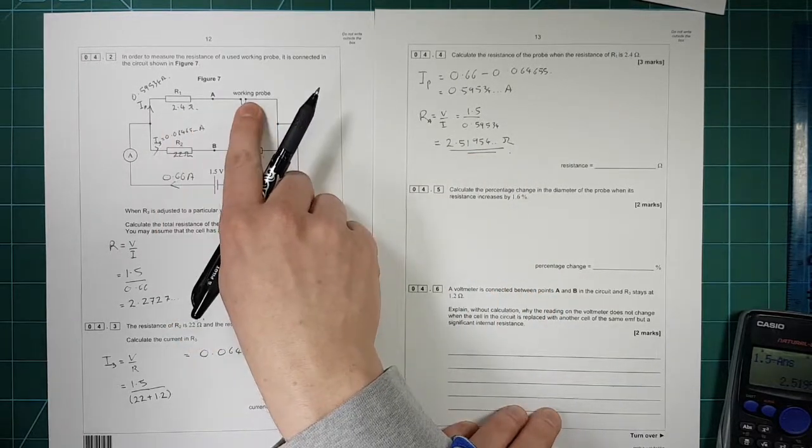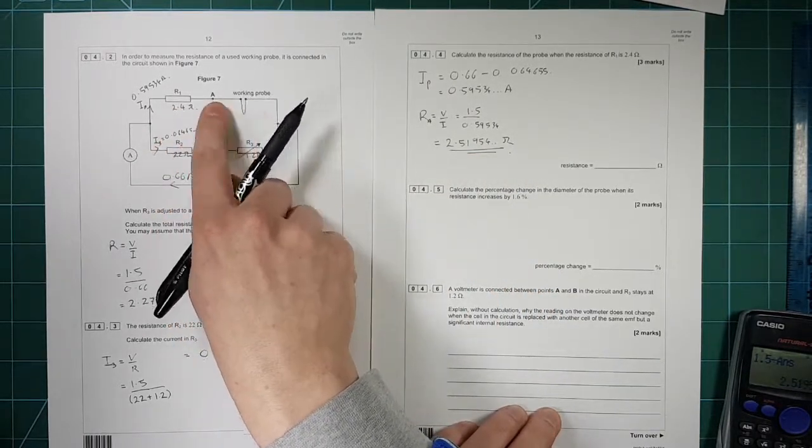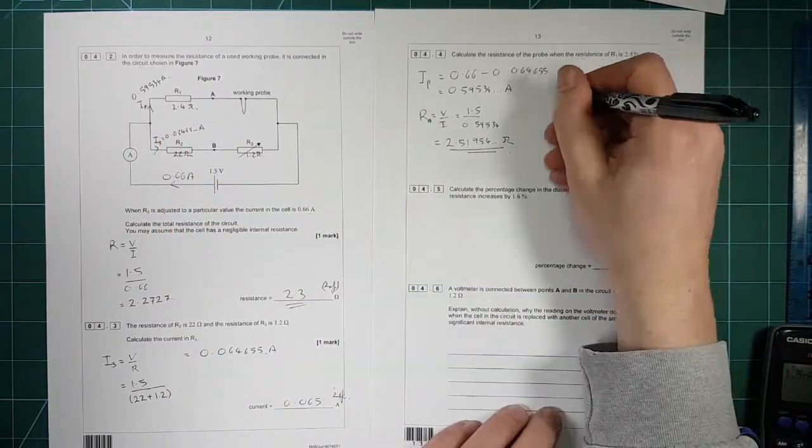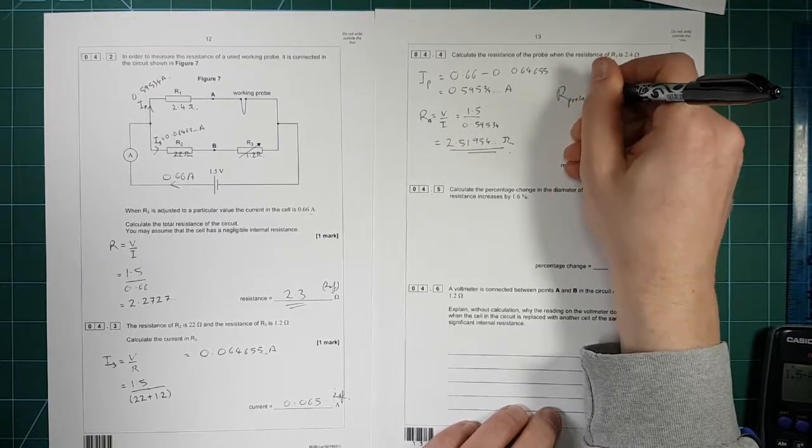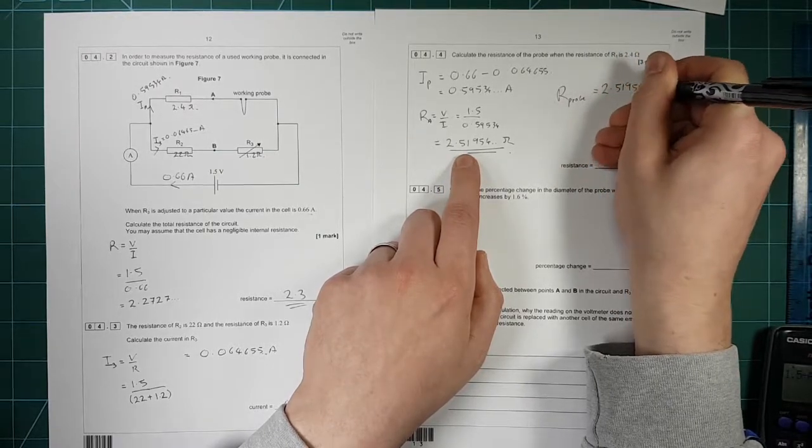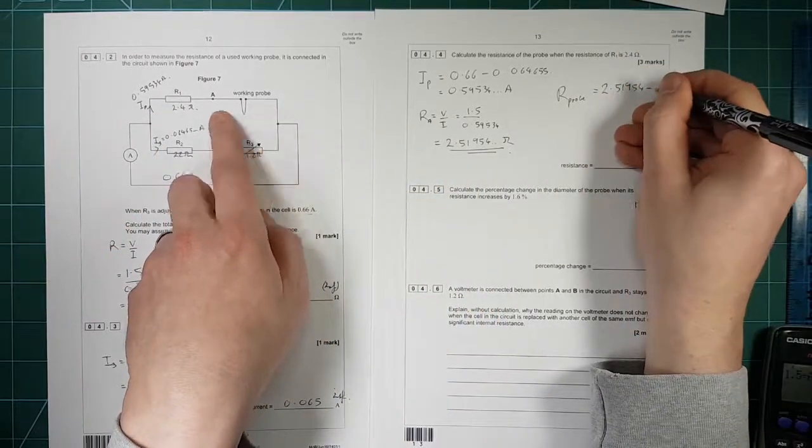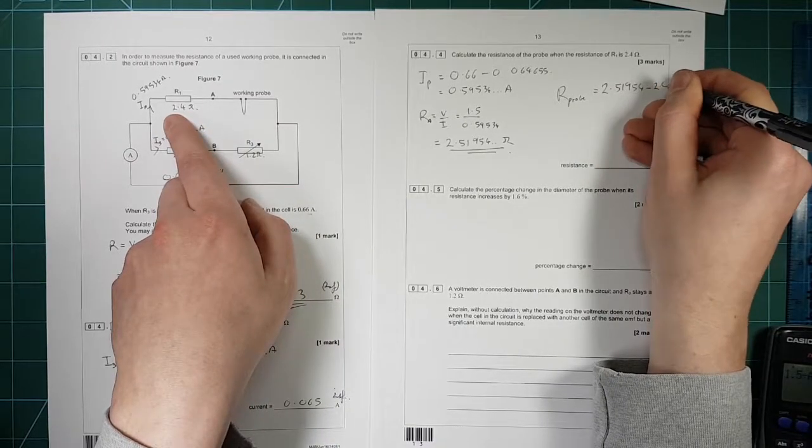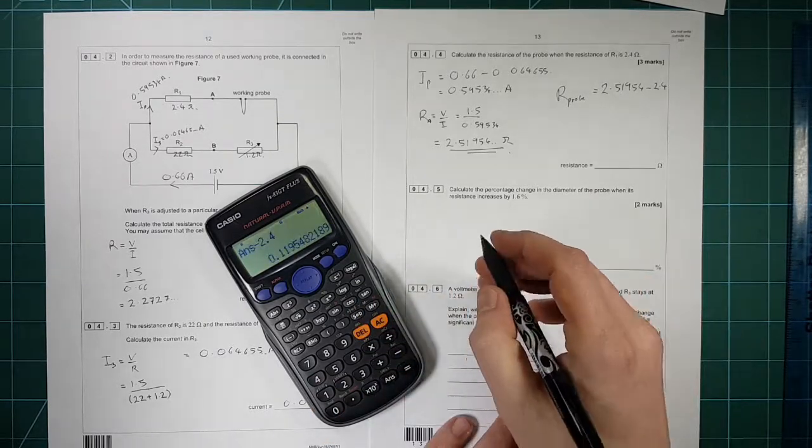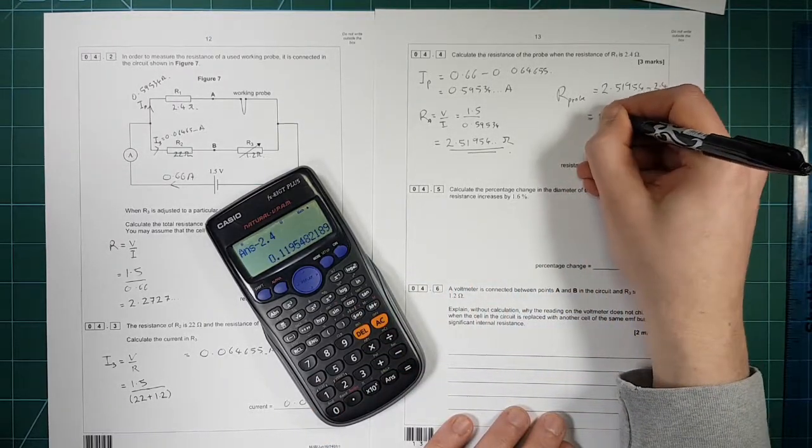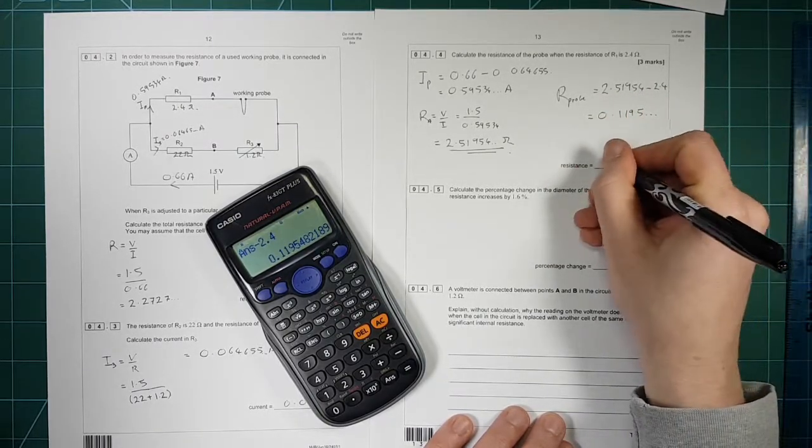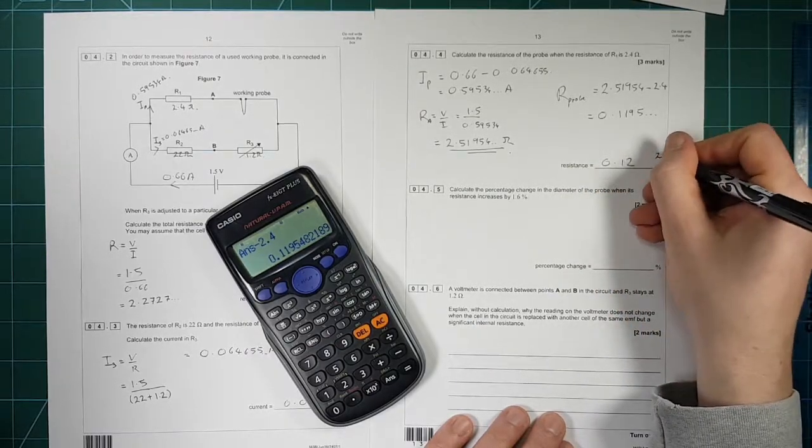So if you want the resistance of this bit, these two add up to that. So you just do this number, take away that number. So R probe is equal to this value, 2.51954, the resistance of that branch, take away the resistance of that, 2.4. And we get 0.1195, etc. So that is 0.12 ohms to 2SF.